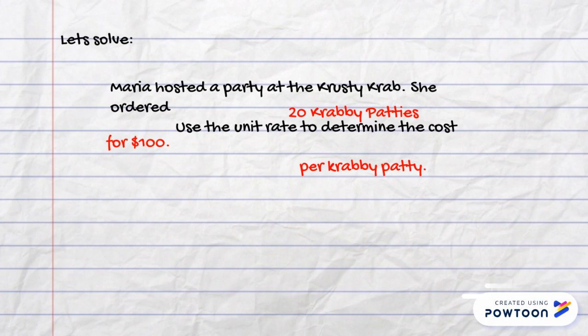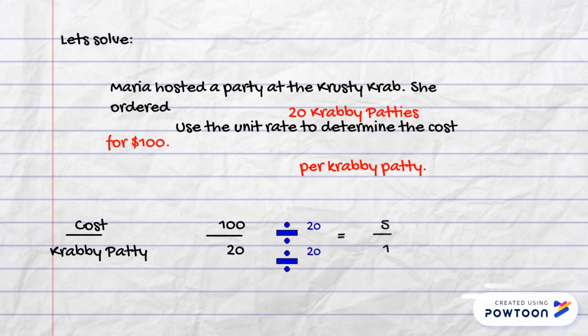To solve this, we will divide the cost by the Krabby Patties. We know that we spent $100 on 20 Krabby Patties. We will divide 100 by 20. We divide 20 from both the top and the bottom, and we get an equivalent fraction of 5 over 1, making our unit rate $5 per one Krabby Patty.